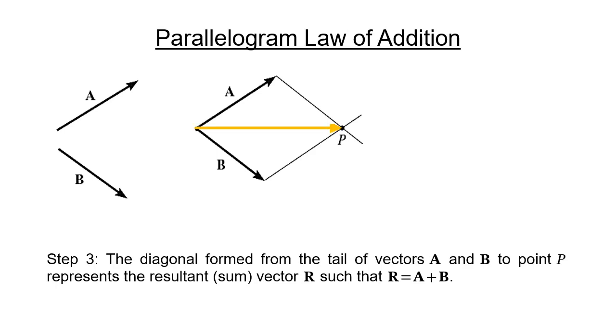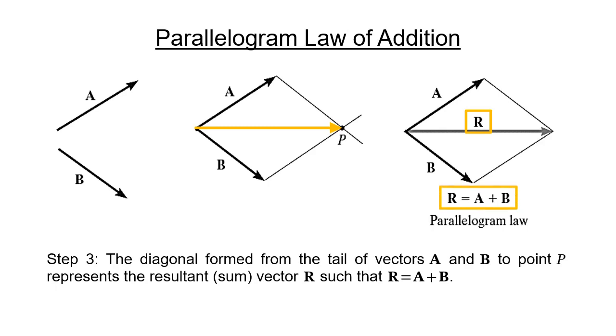Step 3: The diagonal formed from the tail of vectors A and B to point P represents the resultant vector, or the vector sum, denoted as vector R, such that vector R is equal to vector A plus vector B.